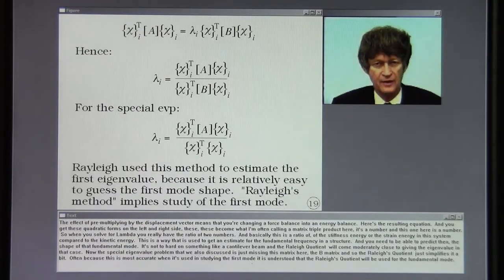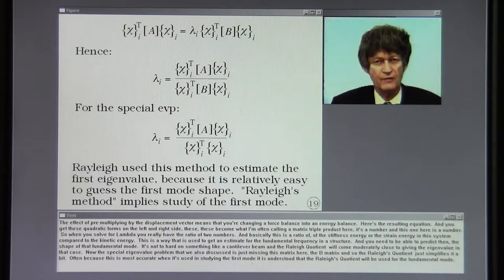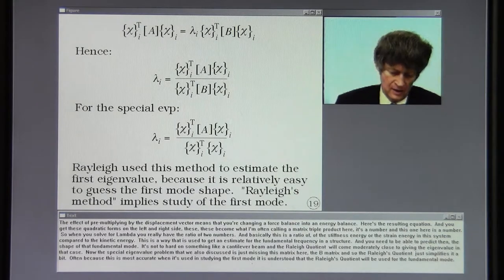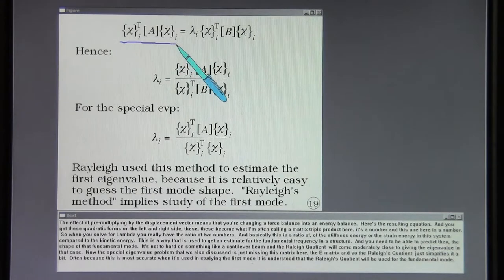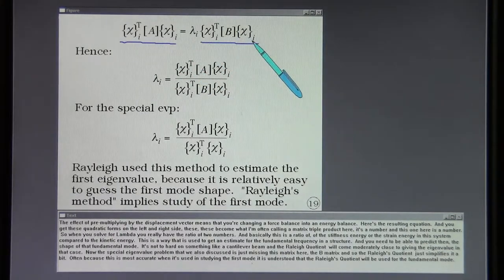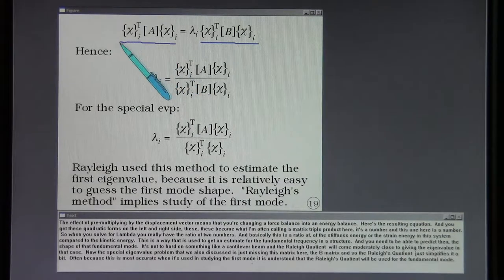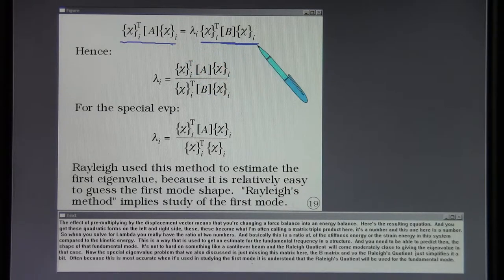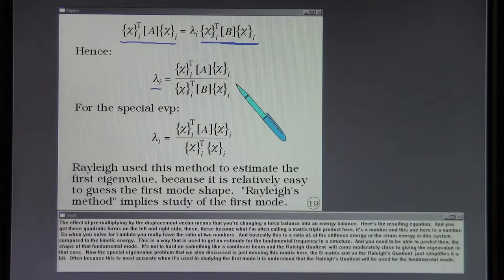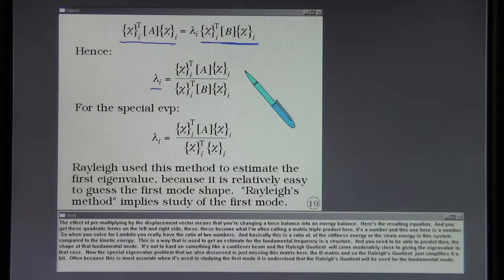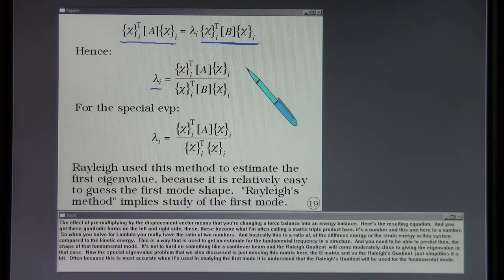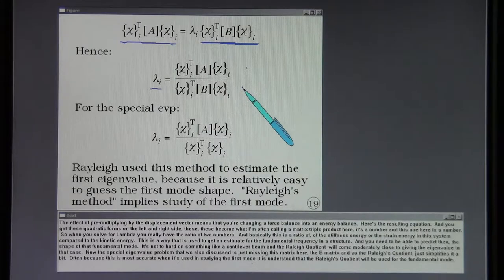I've heard some people call this a Galerkin approach. The effect of pre-multiplying by the displacement vector means that you're changing a force balance into an energy balance. Here's the resulting equation and you get these quadratic forms on the left and right side. These become what I'm often calling a matrix triple product here. It's a number and this one here is a number. So when you solve for lambda you really have the ratio of two numbers. Basically this is a ratio of the stiffness energy or the strain energy in the system compared to the kinetic energy.